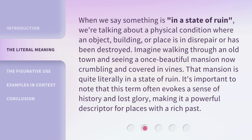When we say something is 'in a state of ruin,' we're talking about a physical condition where an object, building, or place is in disrepair or has been destroyed. Imagine walking through an old town and seeing a once beautiful mansion now crumbling and covered in vines. That mansion is quite literally in a state of ruin. It's important to note that this term often evokes a sense of history and lost glory, making it a powerful descriptor for places with a rich past.